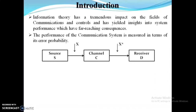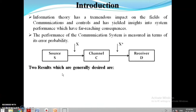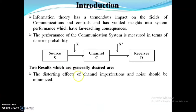However, due to channel limitations and noise, only a distorted version of X is received at the receiver, denoted as X star. Two results are generally desired: the distortion effects of the channel and imperfections due to noise should be minimized. Consider capital X as a set of messages S1, S2, S3 up to SK. Each message will be unique with a different sequence length, and all will not be suitable for transmission over the channel. Due to this, noise and distortion occur, and we will not be able to get the original information at the destination.